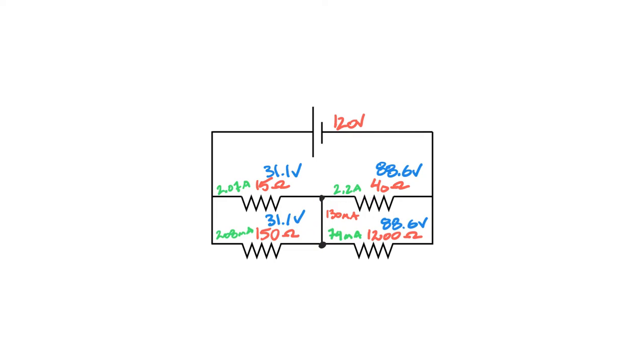I have current dropping off, and then I have current picking up across that bridge. So we can easily say that the current in the bridge right here is 130 milliamps, and it is traveling from this point down to this point. So what we can do now is go back to our original drawing and put that current in there.